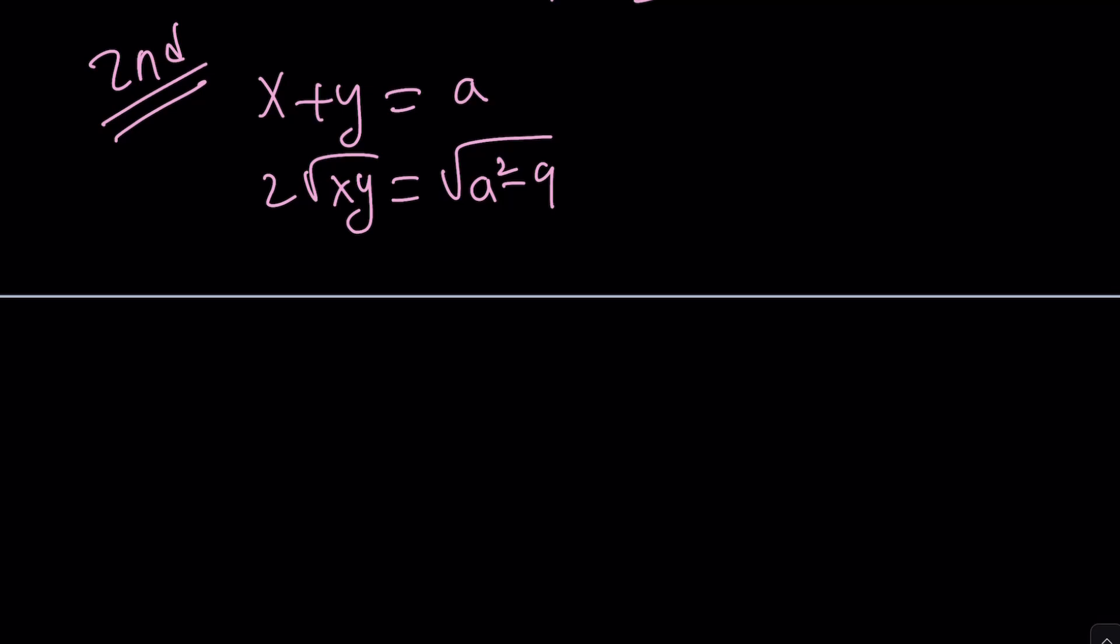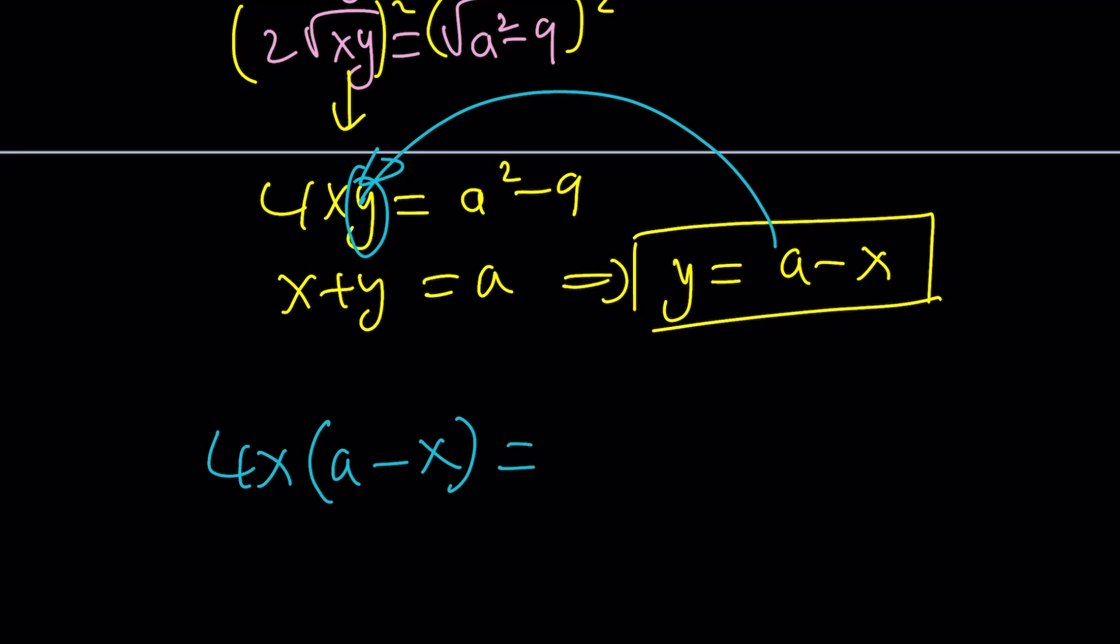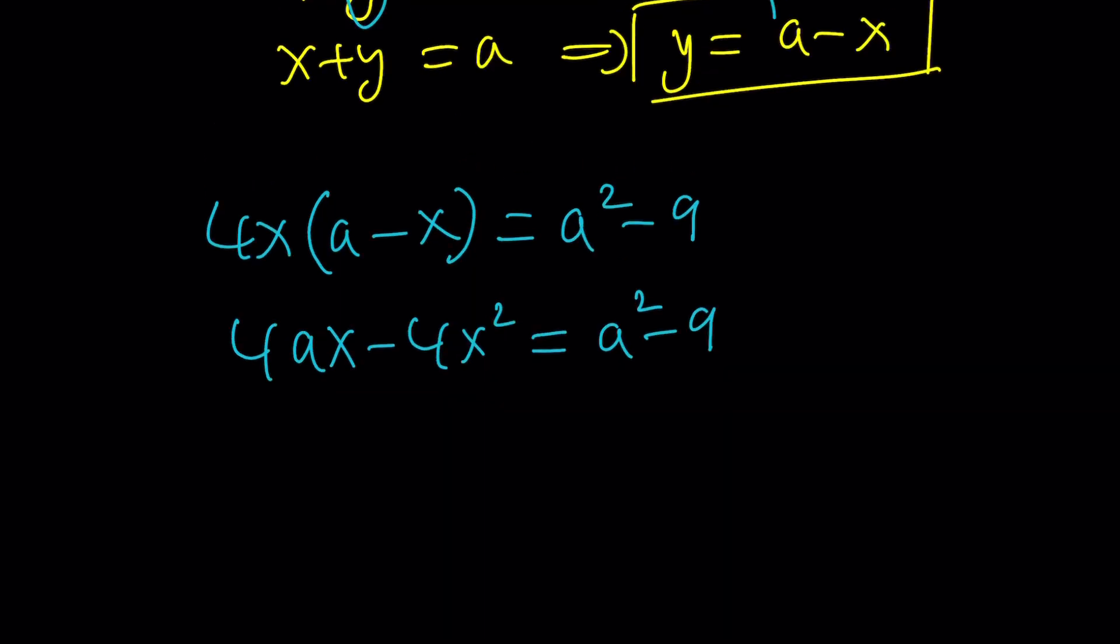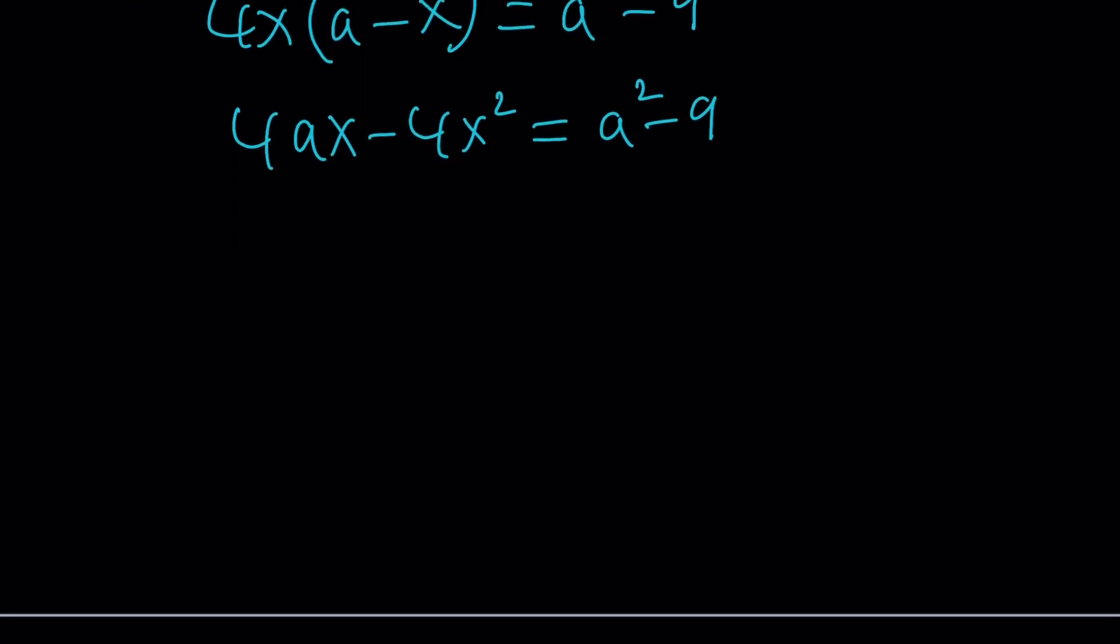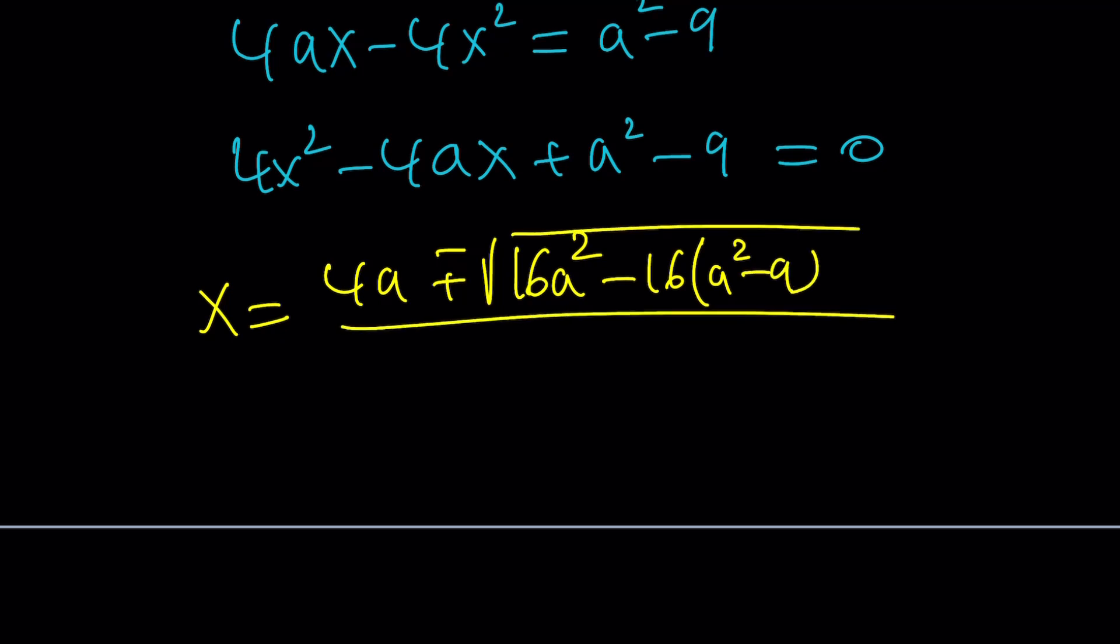So that gives us a system. And let's solve the system as follows. Square both sides here. That gives us 4xy equals a squared minus nine. And then we get x plus y equals a. Let's go ahead and isolate y from here and write it as a minus x. And let's go ahead and plug it in here. That'll give us 4x times y, which is a minus x equals a squared minus nine. Our goal is to solve for x. Let's go ahead and distribute 4ax minus 4x squared equals a squared minus nine. And now let's go ahead and turn this into a full quadratic and then solve using the quadratic formula.